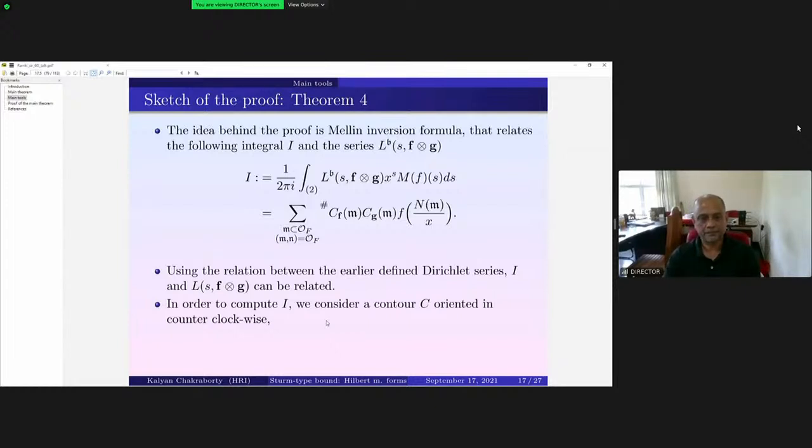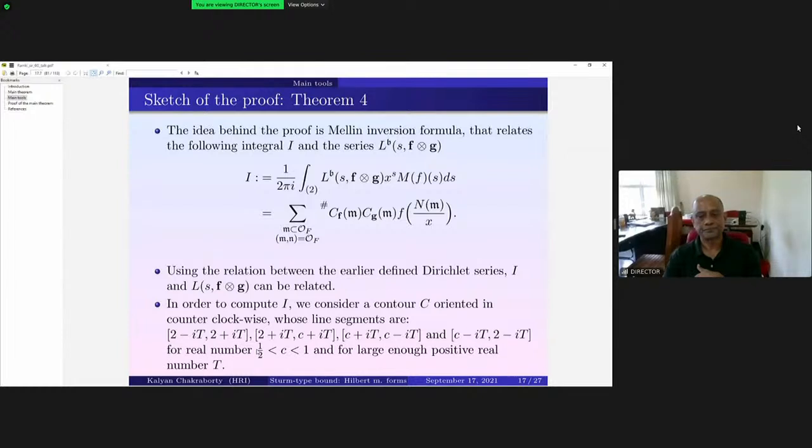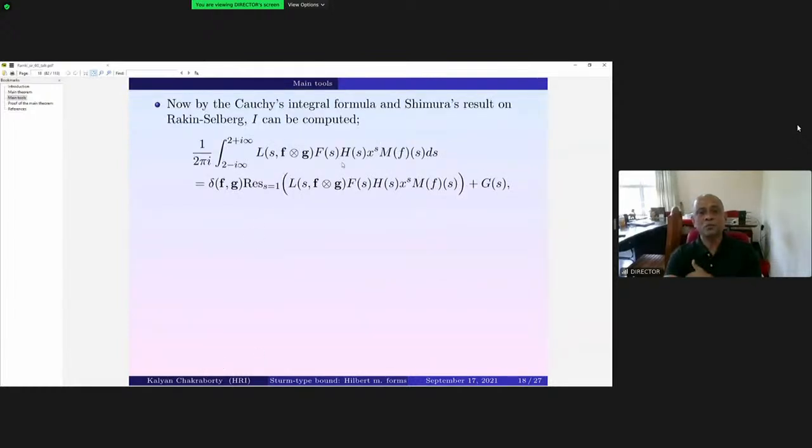And then by using Cauchy's integral formula and this Rankin-Selberg result that Shimura had shown, one can calculate the integral, then equate with this one, and that will give the result. That's the idea. So this is the contour that we choose around two, and the line segments are this. And then we have to, once we substitute the relationship, as I told you, from L_v to L_n, and L_n has direct relationship with this f×g, that Rankin-Selberg convolution, put these values here.